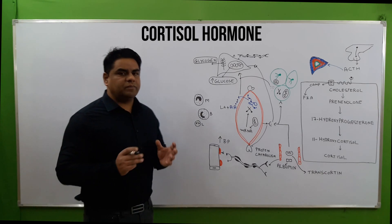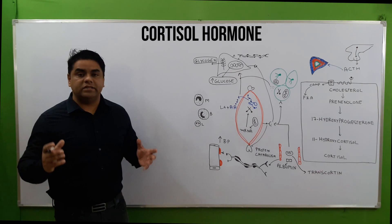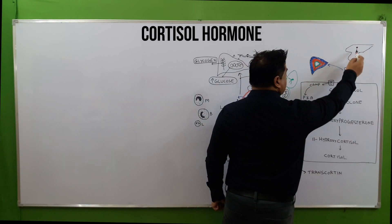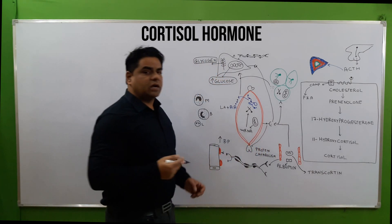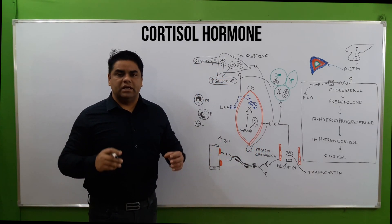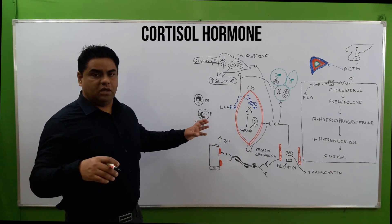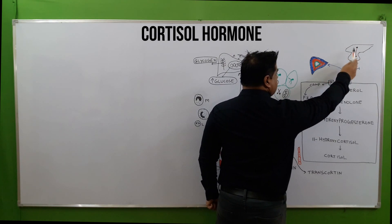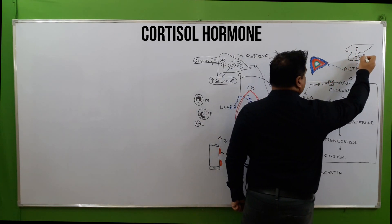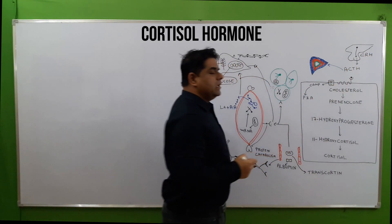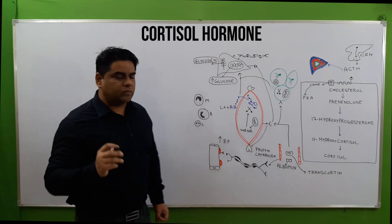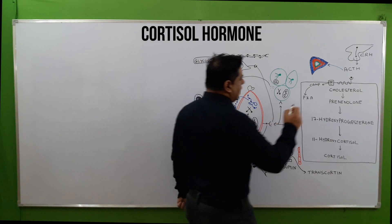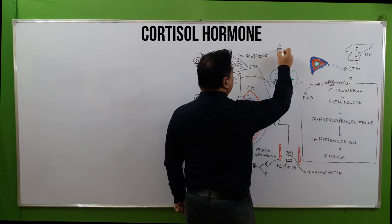The hypothalamus is the chairman of the endocrine society and it contains the paraventricular nucleus. The paraventricular nucleus gets stimulated by certain factors, which we will discuss later. When stimulated, it releases CRH, the corticotropin releasing hormone, which then stimulates the anterior pituitary gland to secrete adrenocorticotropic hormone, or ACTH.